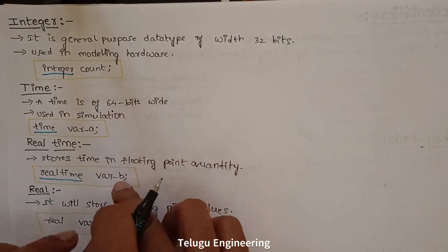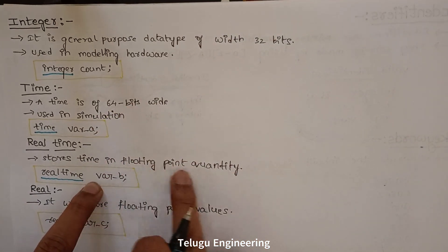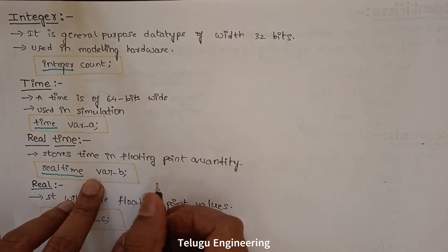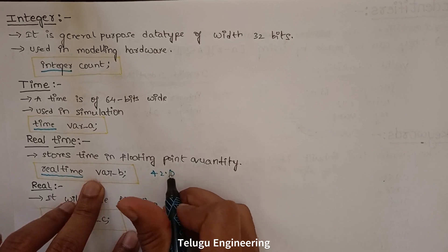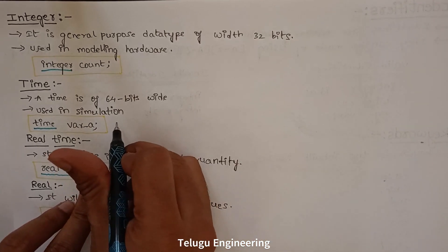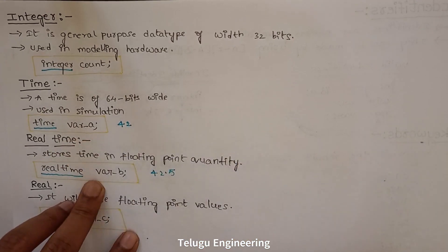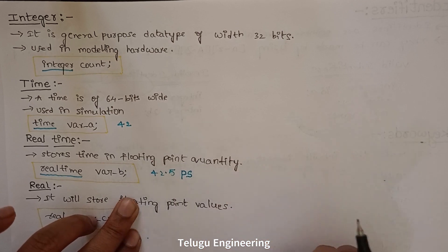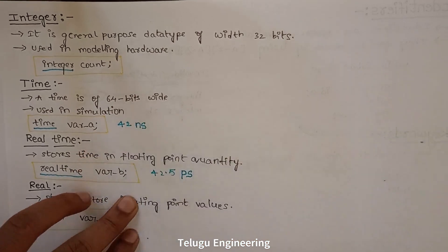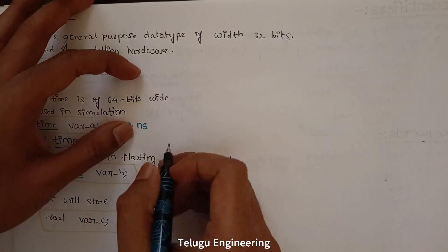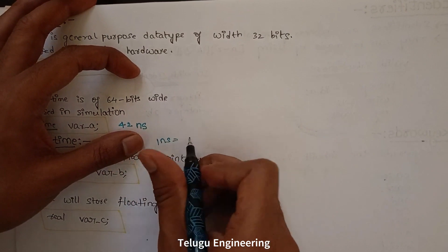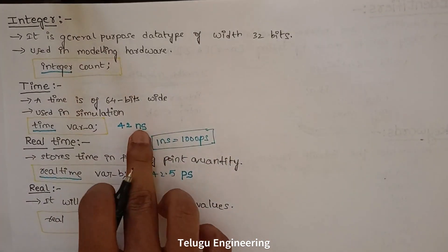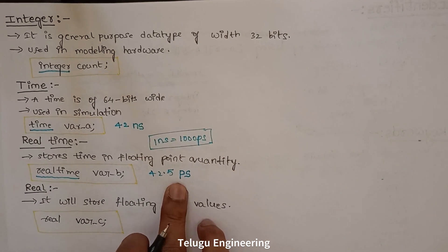The difference between realtime and real is that realtime stores floating point time values. For example, 42.5 — we store that in the realtime variable. Since 1 nanosecond equals 1000 picoseconds, we may need to store real-time values in picoseconds, which requires floating point precision.